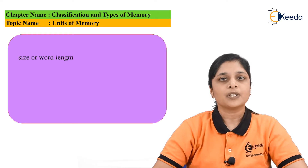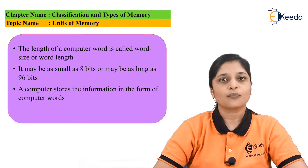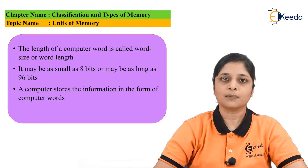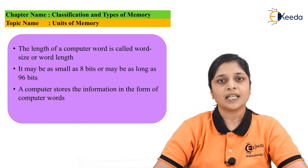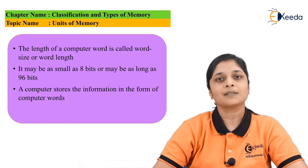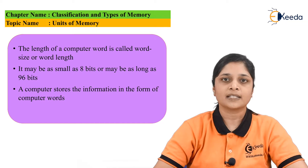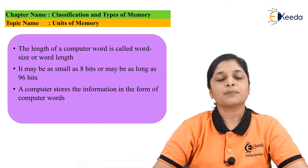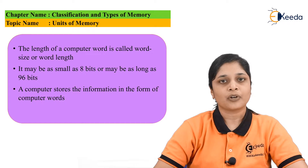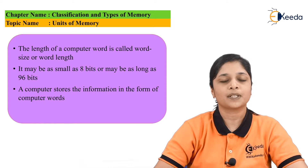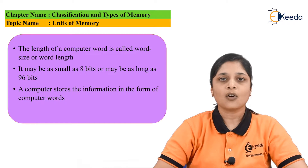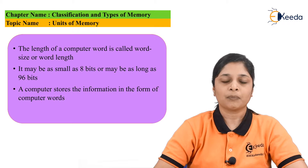The word memory unit consists of a fixed number of bits as per the requirement inside the program. The minimum value for word should be eight bits, and the maximum value can be up to 96 bits. As per the requirement inside the program, you can define the word in the computer system or while writing the program. This is all about the units of a memory.